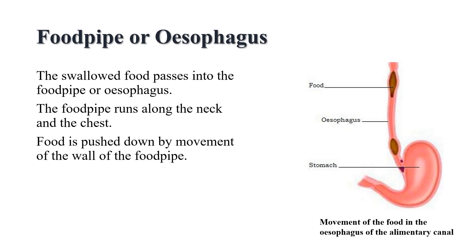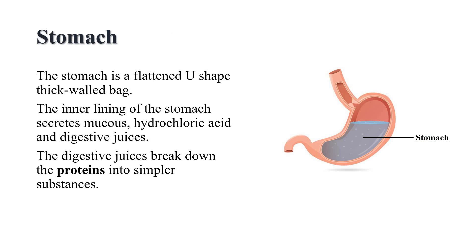The swallowed food passes into the food pipe or esophagus. The food pipe runs along the neck and the chest. Food is pushed down by movement of the wall of the food pipe. This movement takes place throughout the alimentary canal and pushes the food downwards. The stomach is a thick, walled bag. Its shape is like a flattened U and it is the widest part of the alimentary canal.